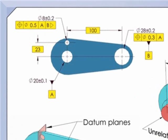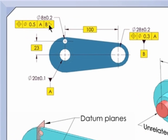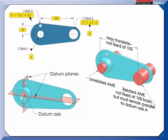If I add the translation modifier, as you see here, to datum feature B, now the simulator is not locked in at the 100 basic but is free to float until it fills the hole. This gives a more reproducible alignment of the datum planes.